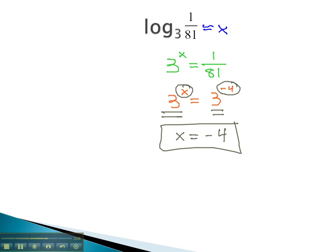X represents the solution to the logarithm, so log base 3 of 1 over 81 must be negative 4. We can quickly evaluate a log by making it equal to x, and then rewriting it as an exponential equation.